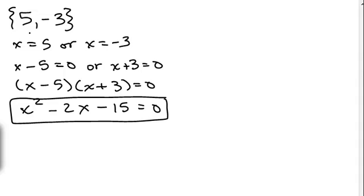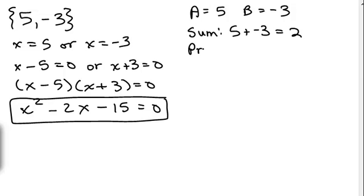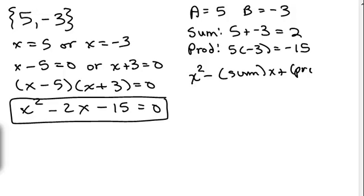In this particular problem, my A is 5 and my B is -3. Those are our two solutions. What's the sum? In other words, what's 5 plus -3 equal to? That's 2. What's the product? That's 5 times -3, which is -15. I'm saying you should be able to put that in this formula. X squared minus the sum plus the product equals 0 and you should get the same answer.